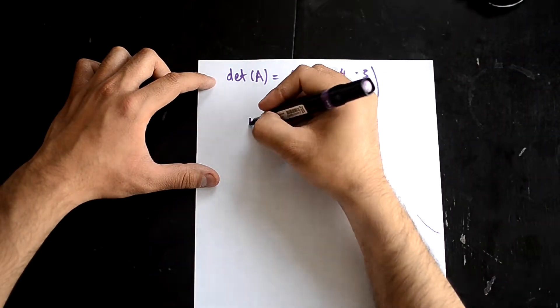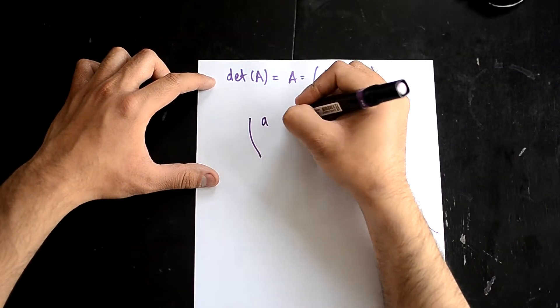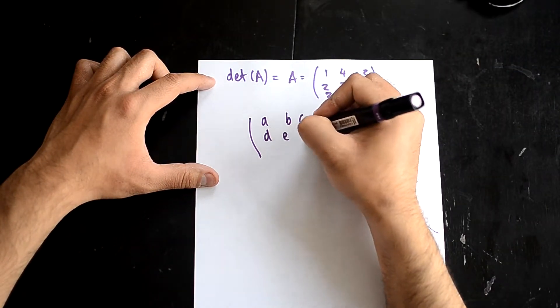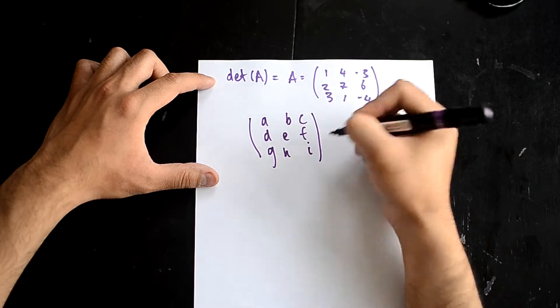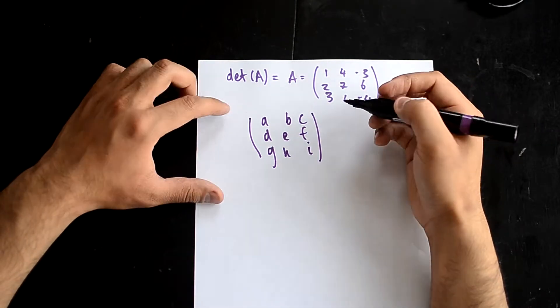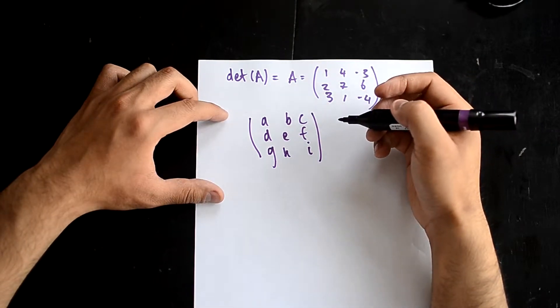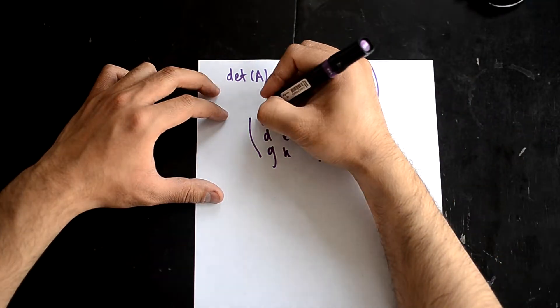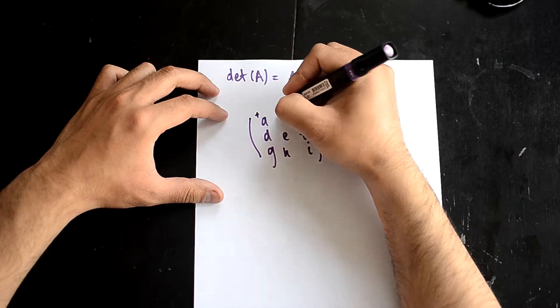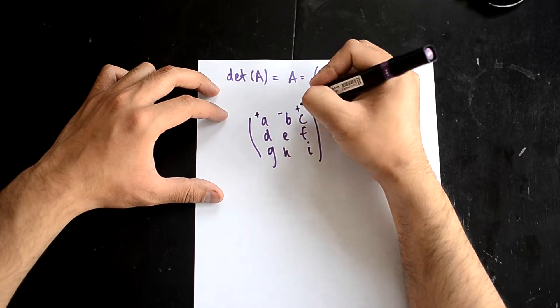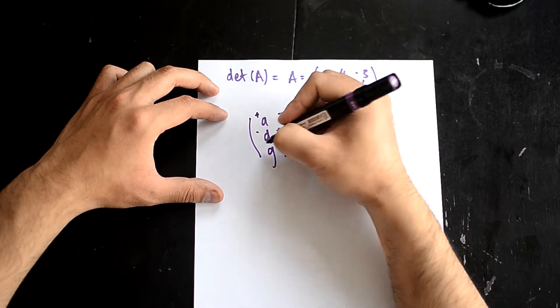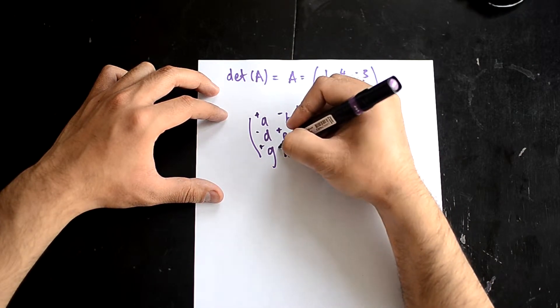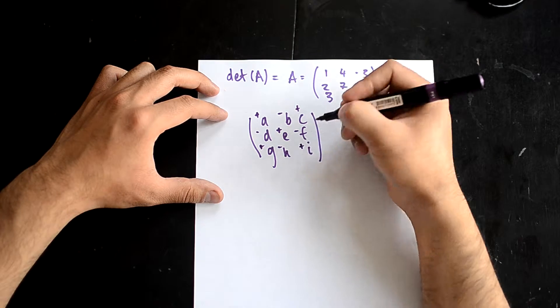If you look at a matrix like this, everything here follows a pattern: positive, negative, positive, negative, positive, negative, positive, negative, positive.